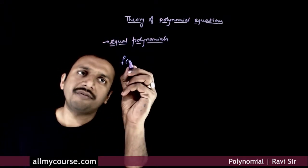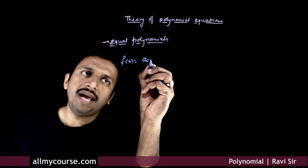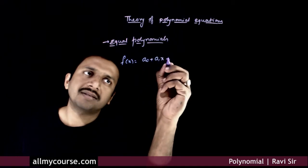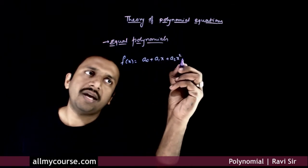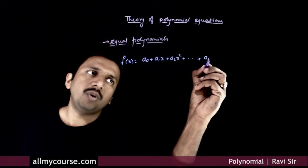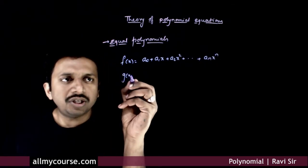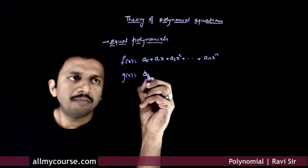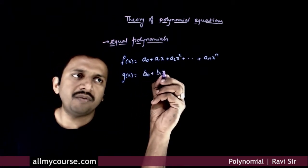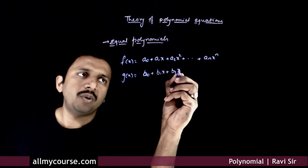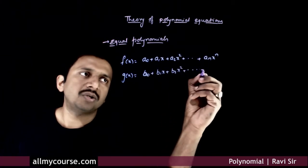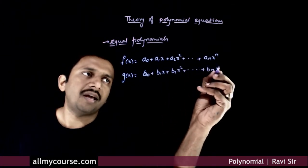If you have a polynomial f(x) equal to a0 plus a1x plus a2x squared plus so on up to anx to the power n, and g(x) equal to b0 plus b1x plus b2x squared plus so on up to bnx to the power n.